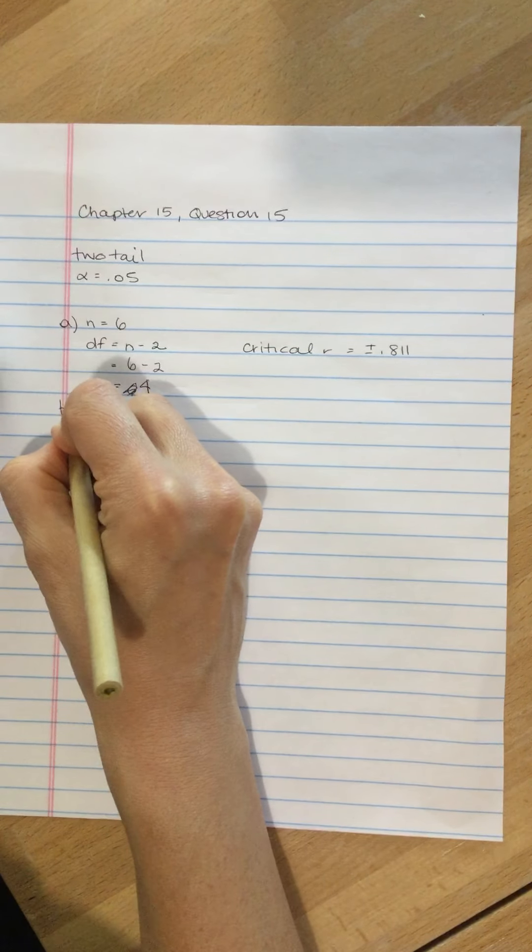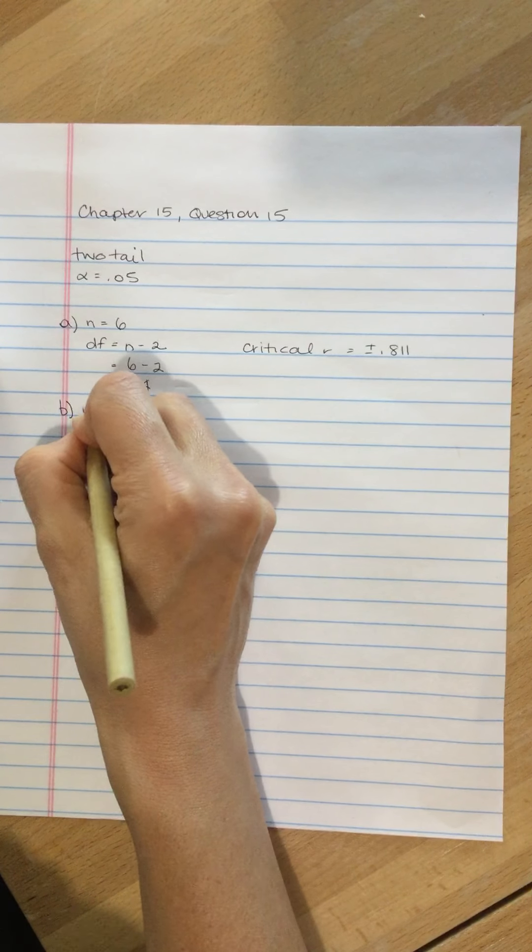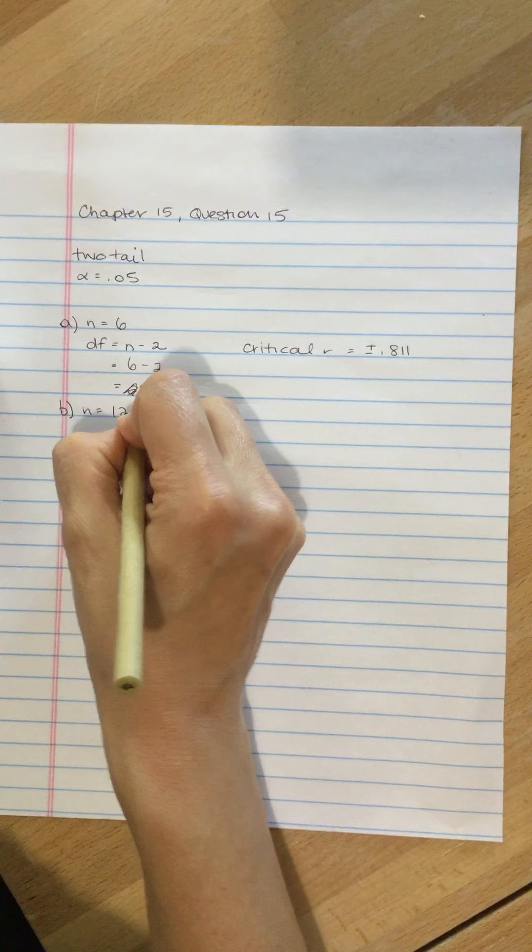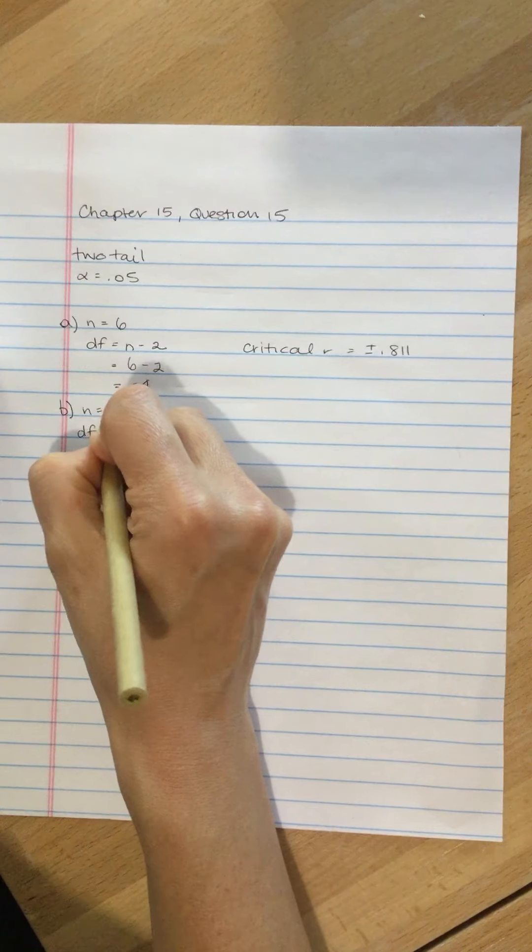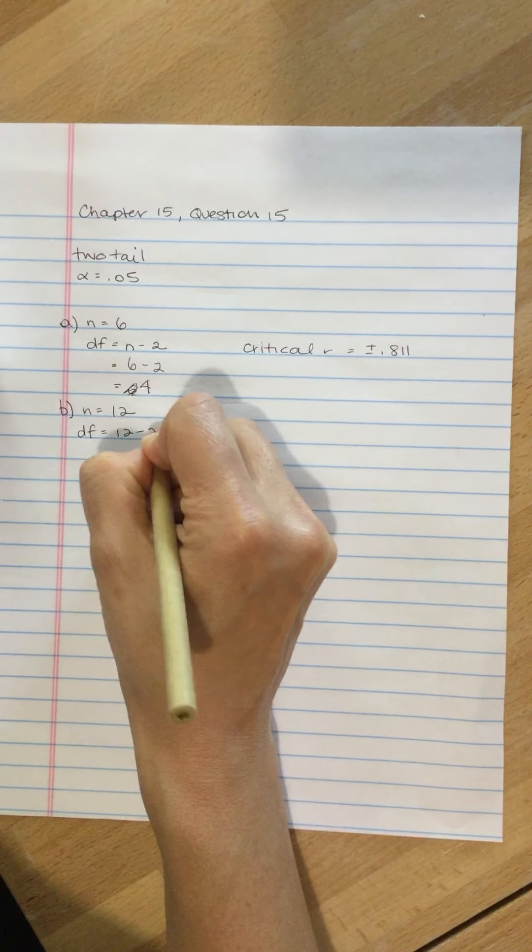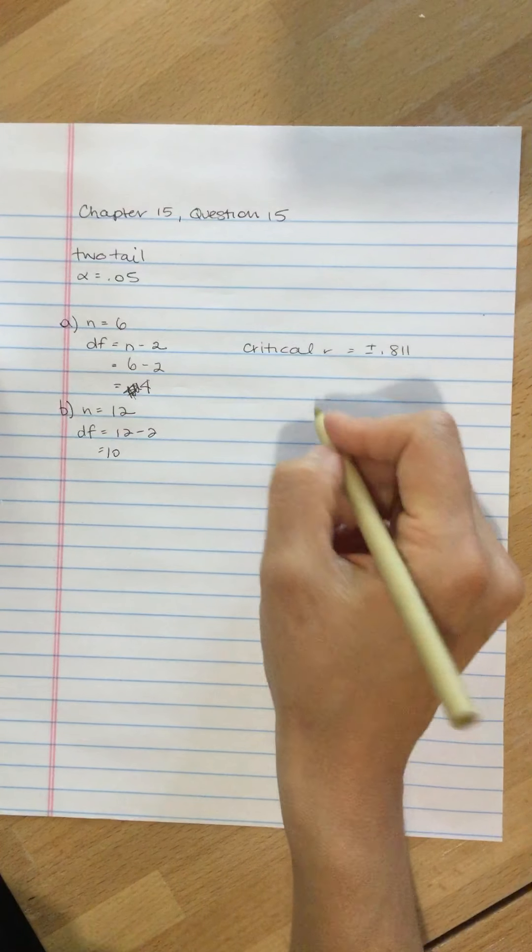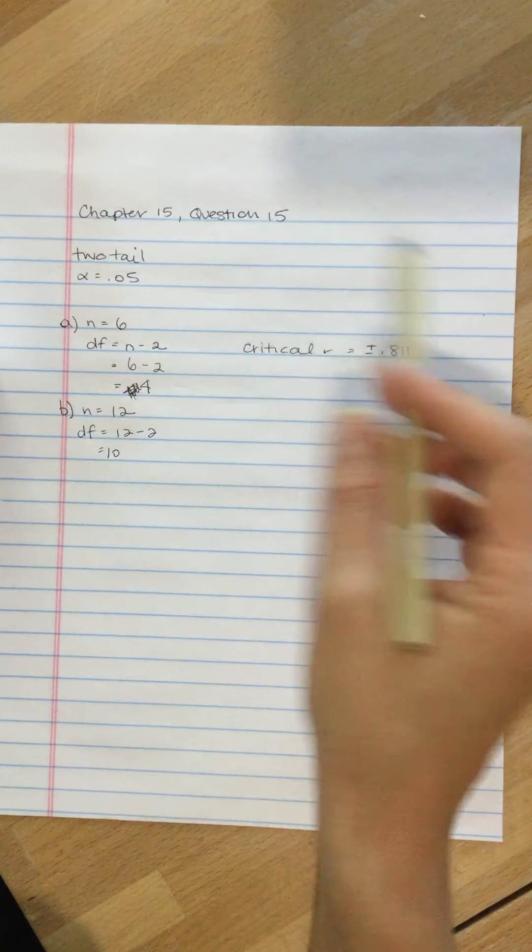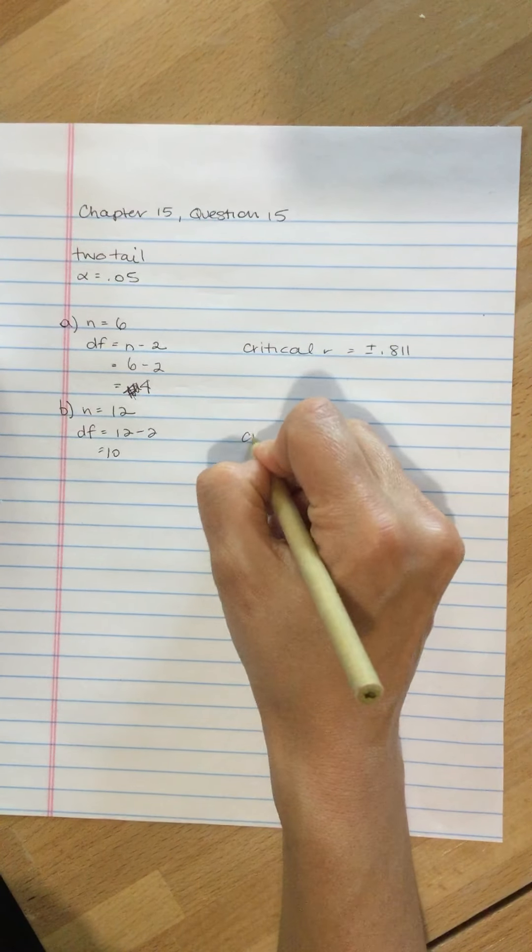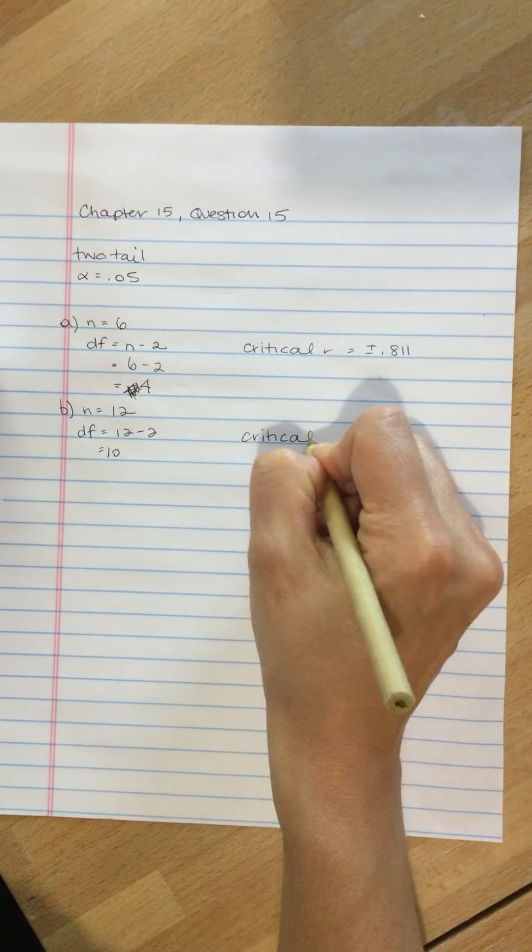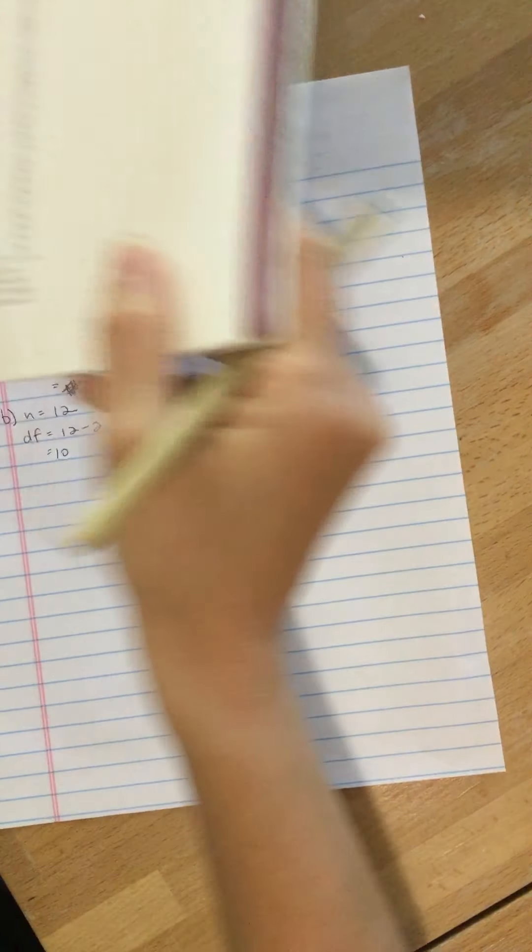Question B, the n is 12. So the degrees of freedom, that's 12 minus 2, so the degrees of freedom are 10. And again, two-tailed test, alpha of 0.05, so we're looking for our critical R. And what is it equal to?